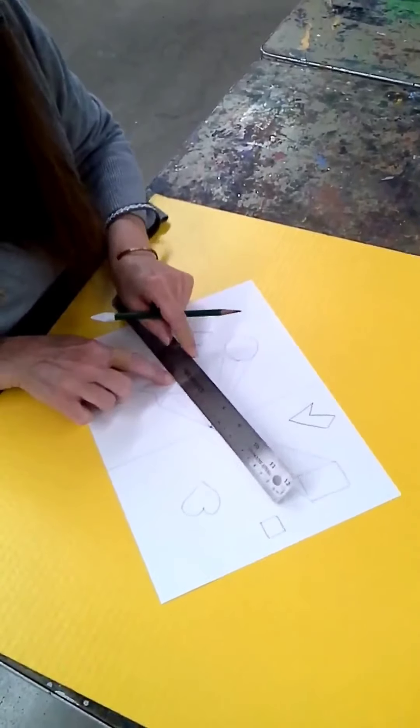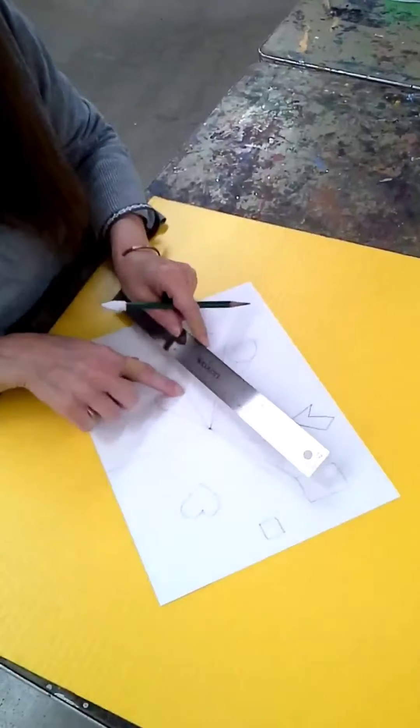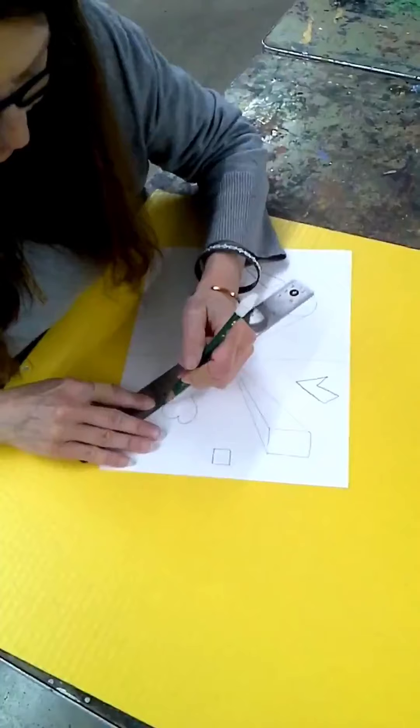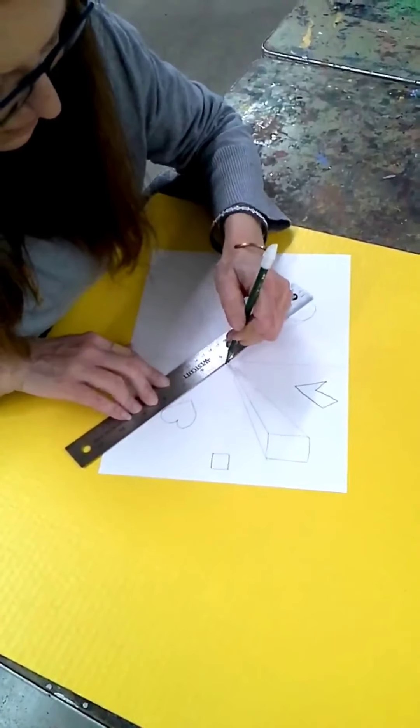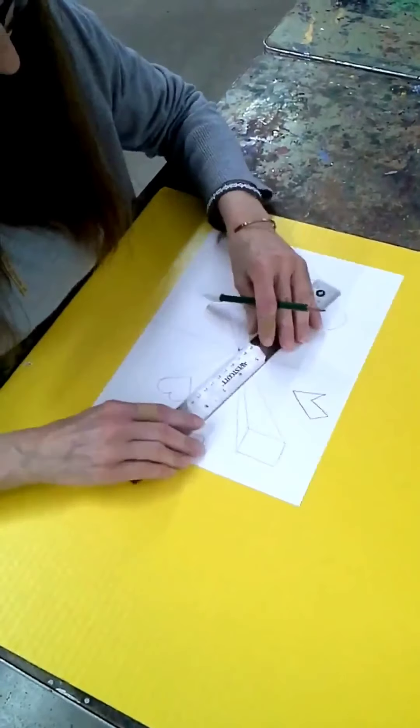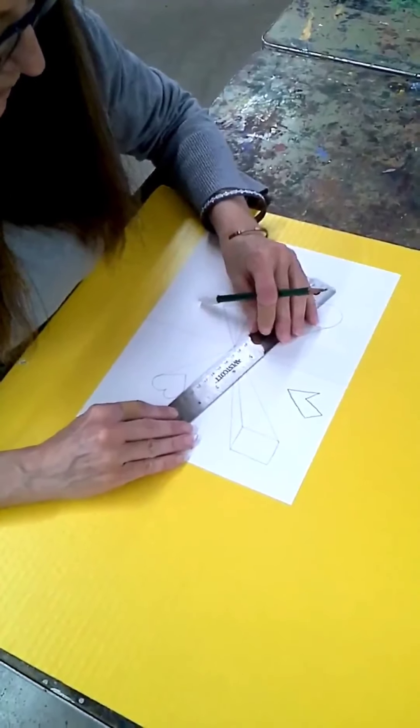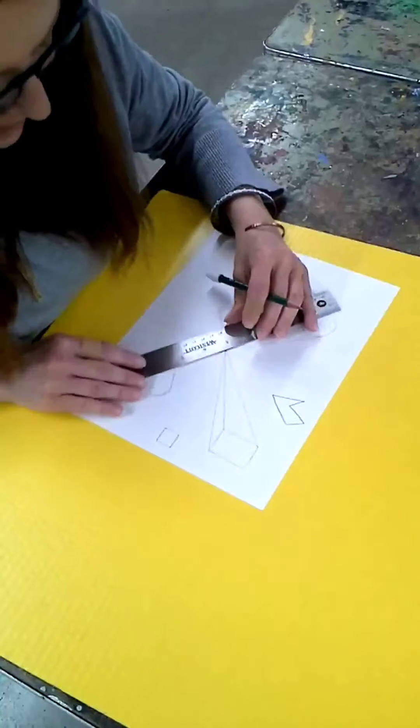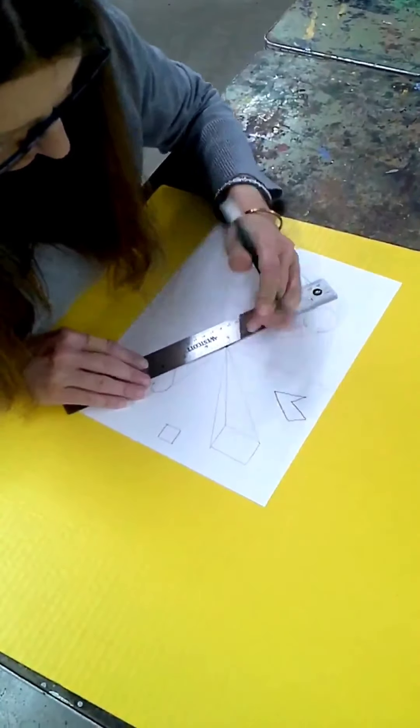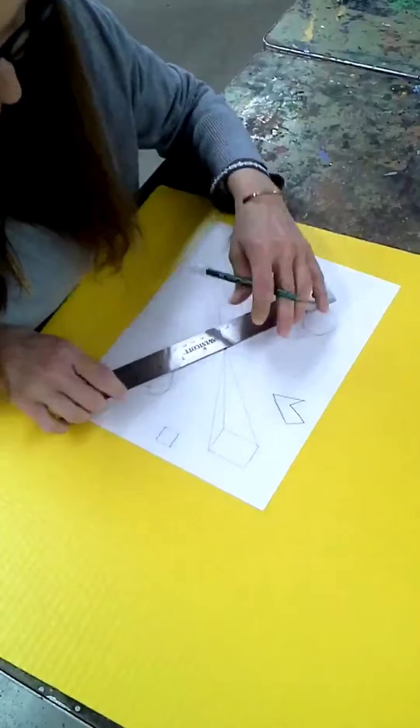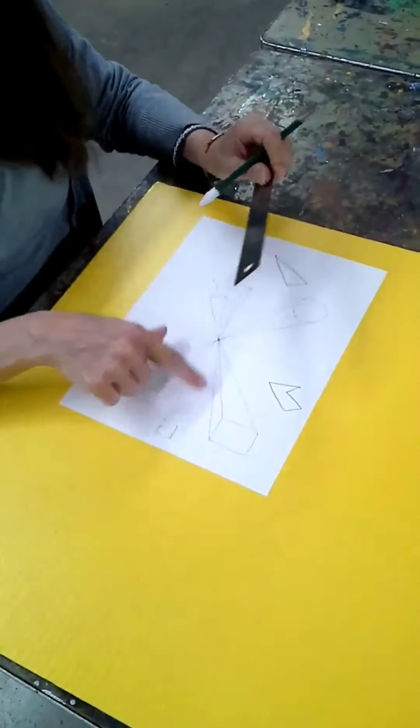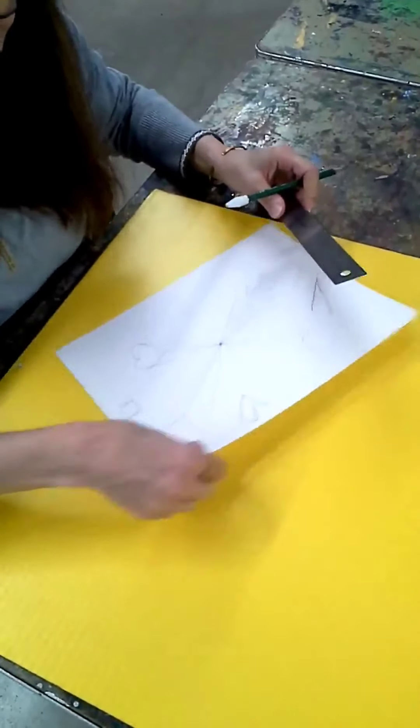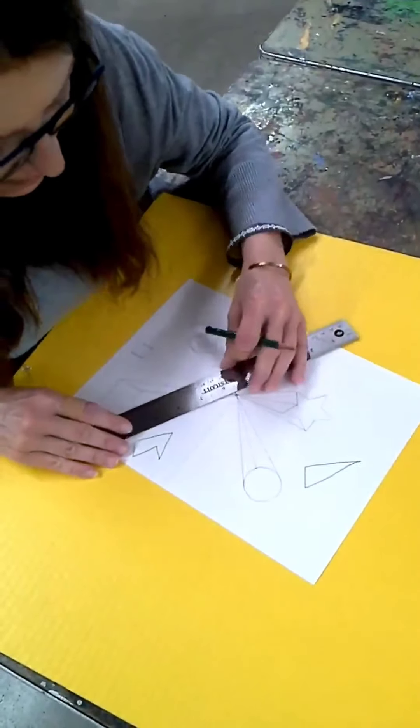I didn't do one here because it's pretty much lined up already and it's going to be covered. So here, this is the heart. I'm going to line it up to the side like I did the circle. And when you're drawing your conversion lines, they can be pretty light because you can go back and erase those.